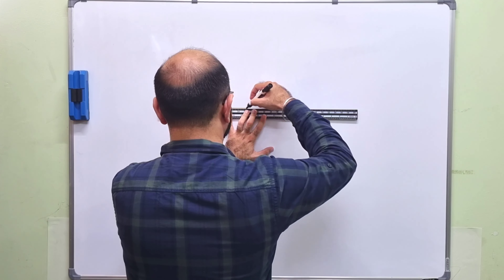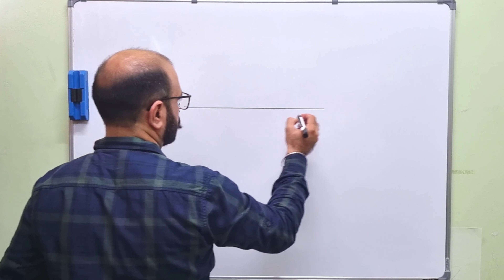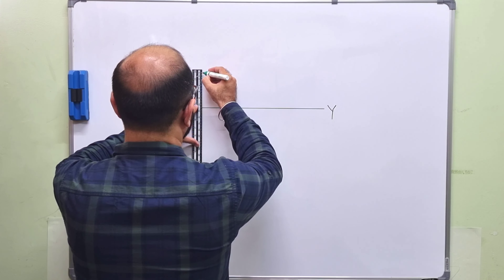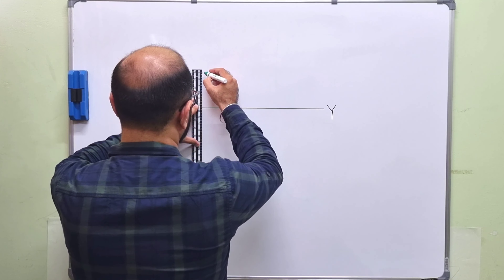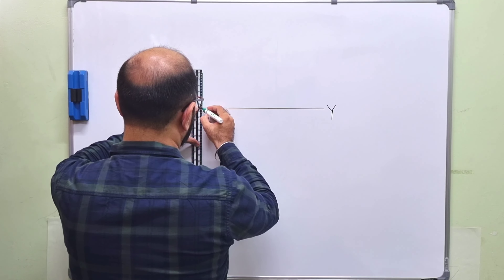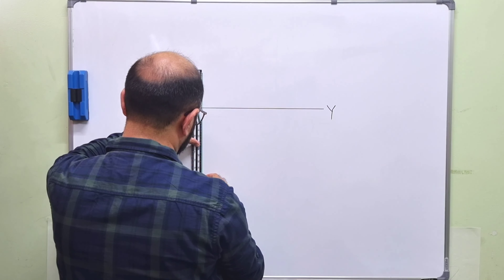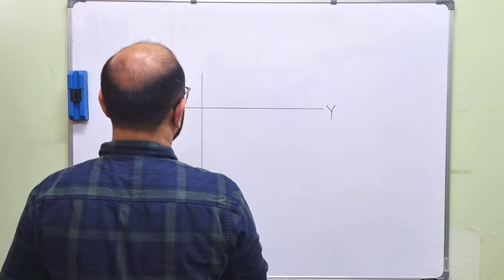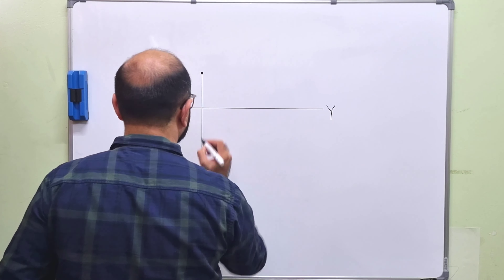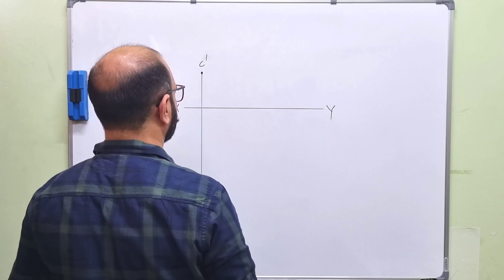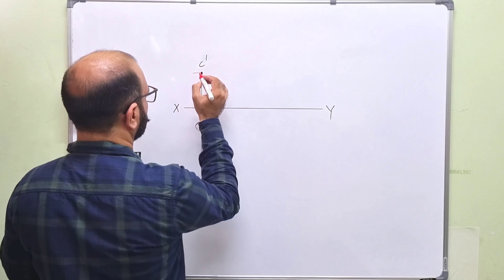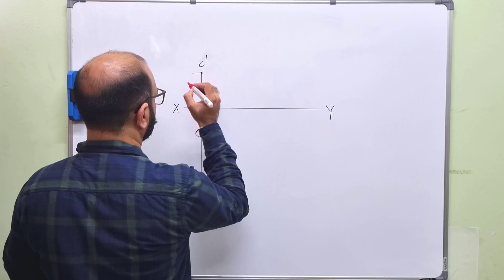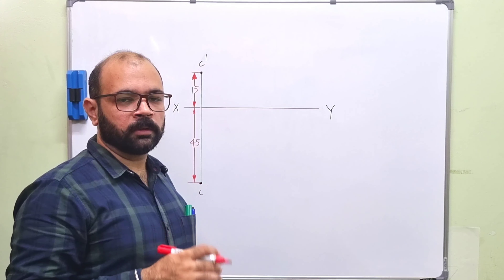We will draw the projections of point C and point D. First, we draw the XY line. Point C is 15mm above HP, so the front view is 15mm above XY line. C is also 45mm in front of VP, which means the top view is 45mm below the XY line. Let us mark these dimensions: 15mm above and 45mm below XY.